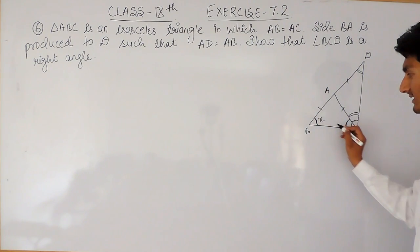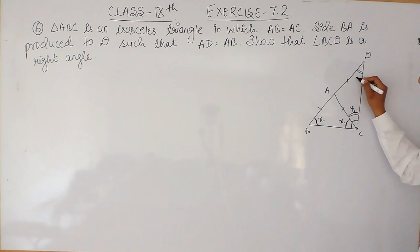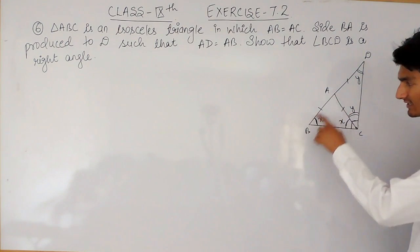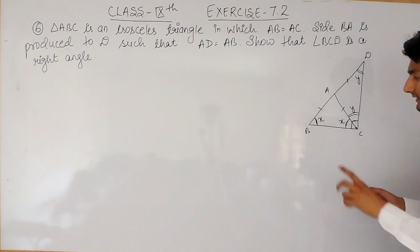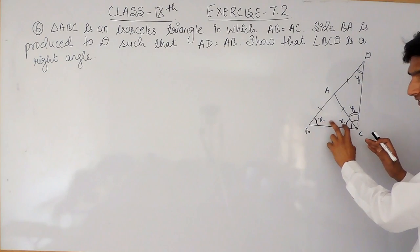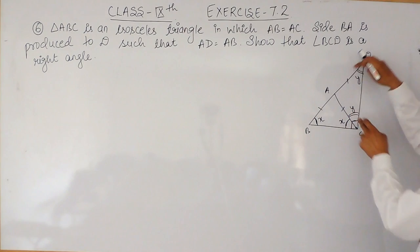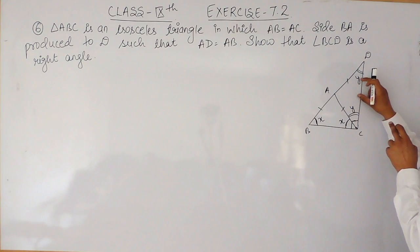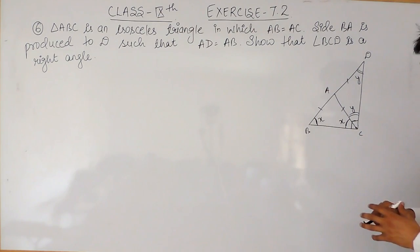If I consider this angle as X, this must also be X. And if I consider this angle as Y, this must also be Y. One important thing: this side equals this side and this side equals this side, but that does not mean all four angles will be equal. If one pair gives 80 degrees each, and the other pair gives 30 degrees each, they are not all the same.